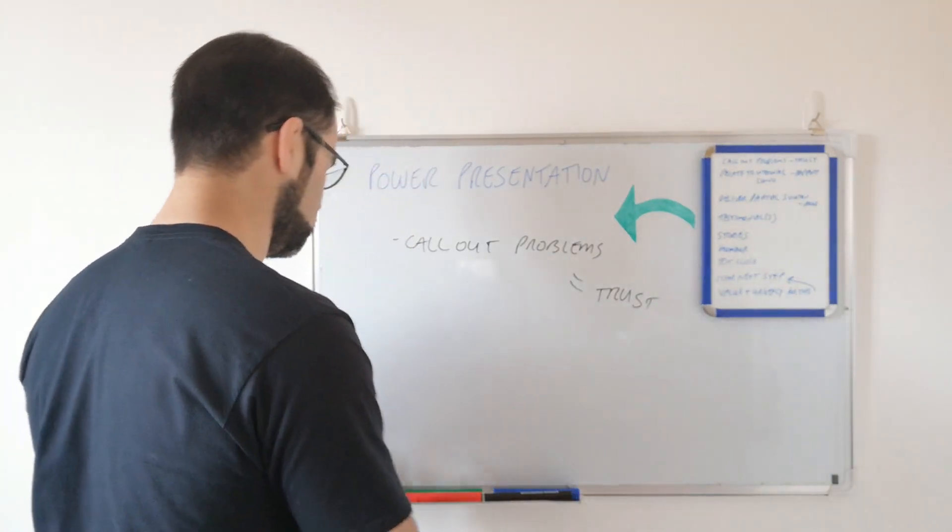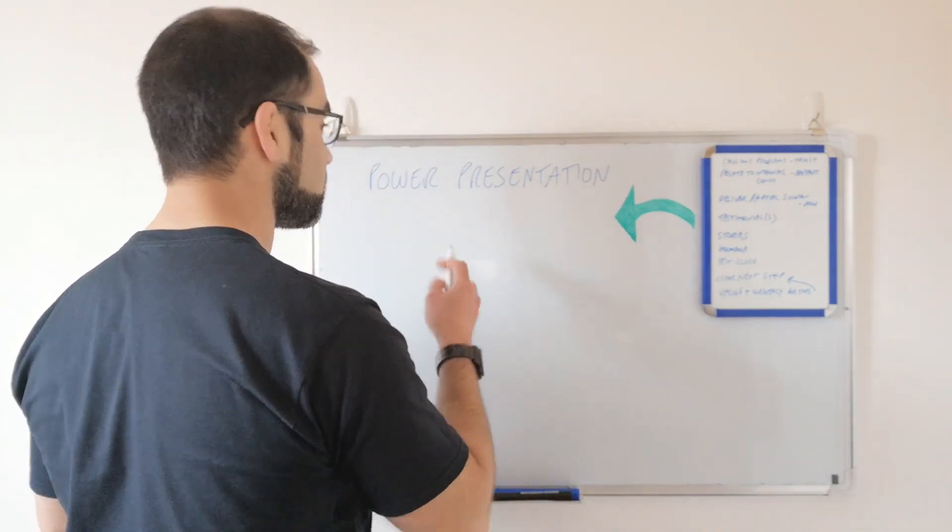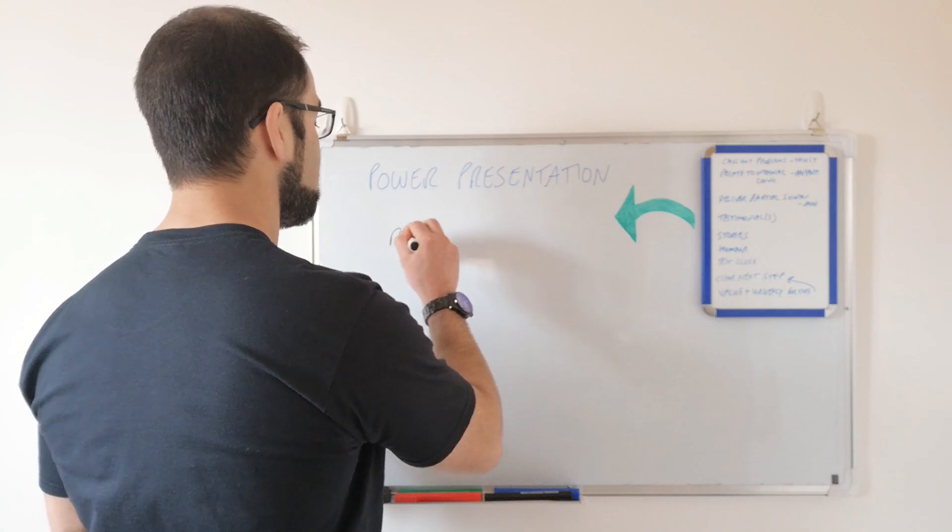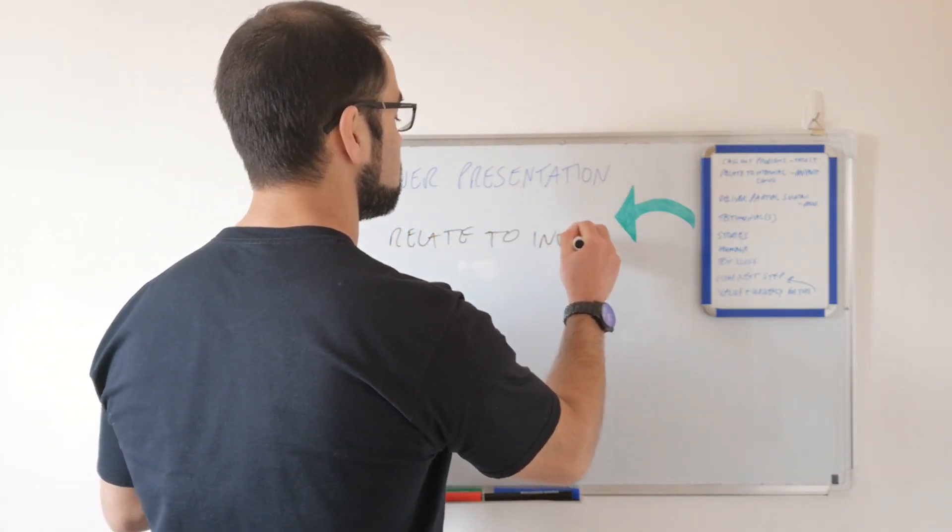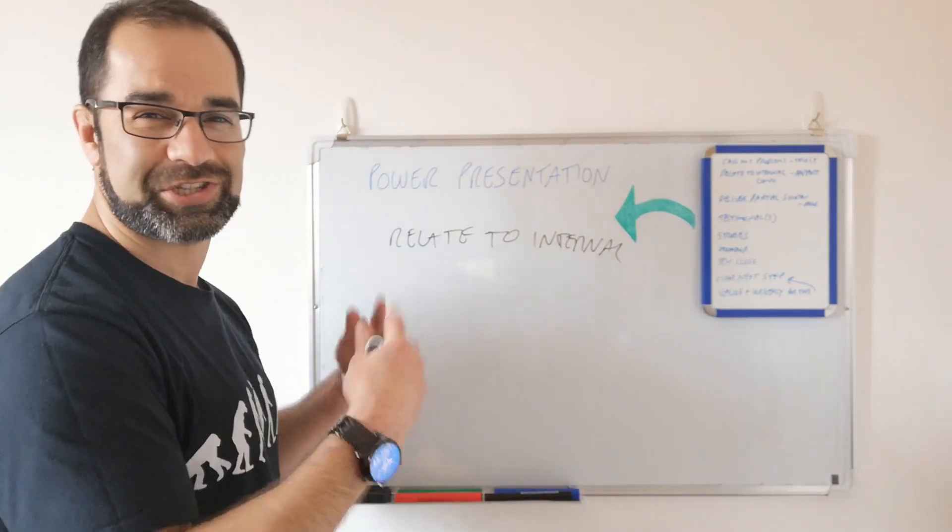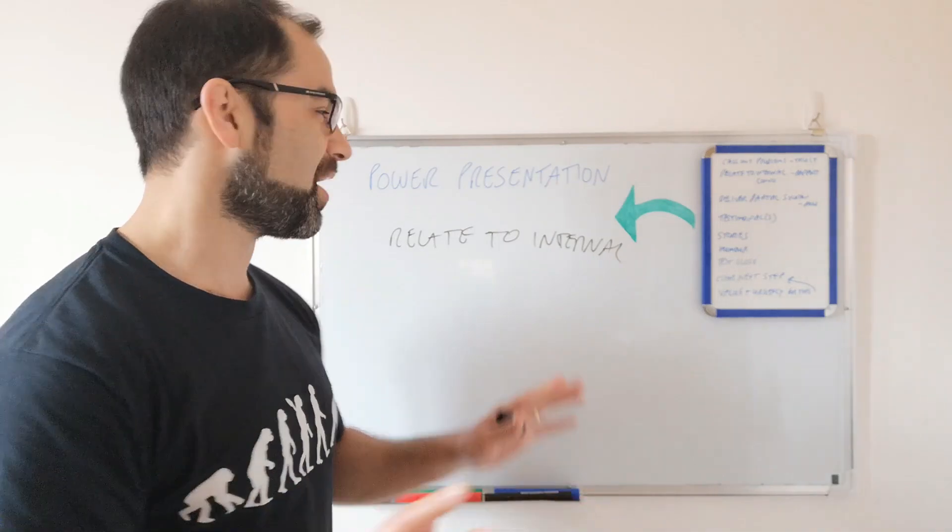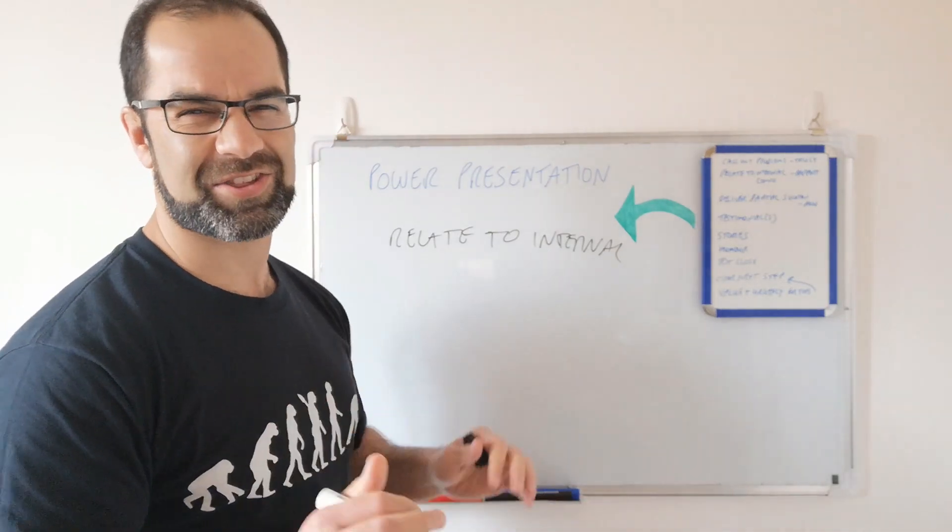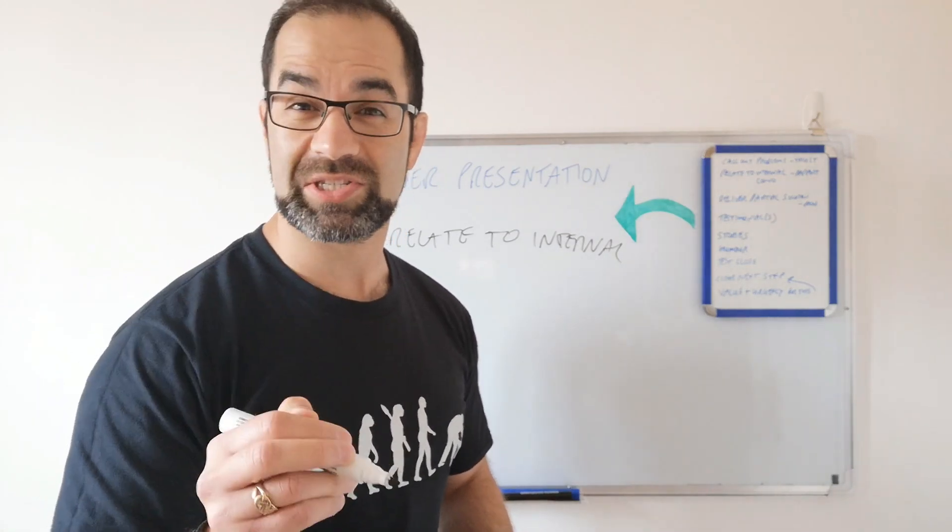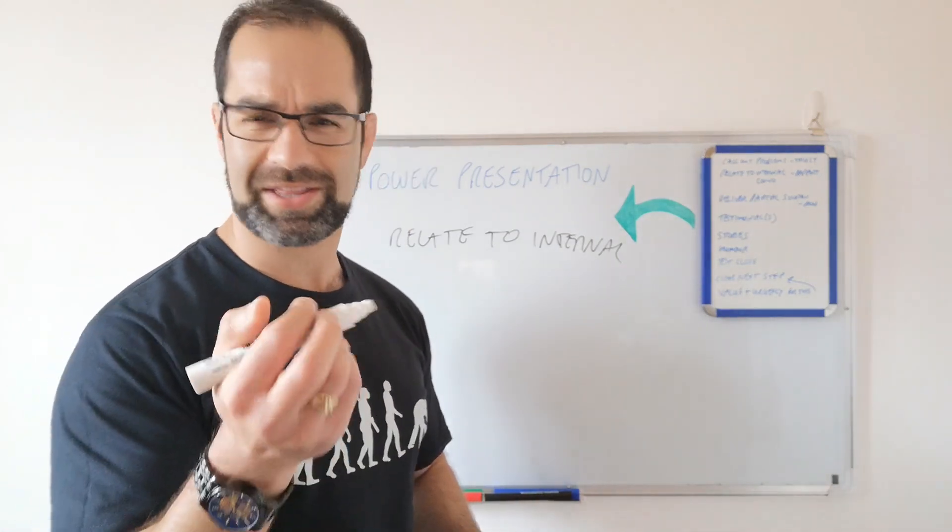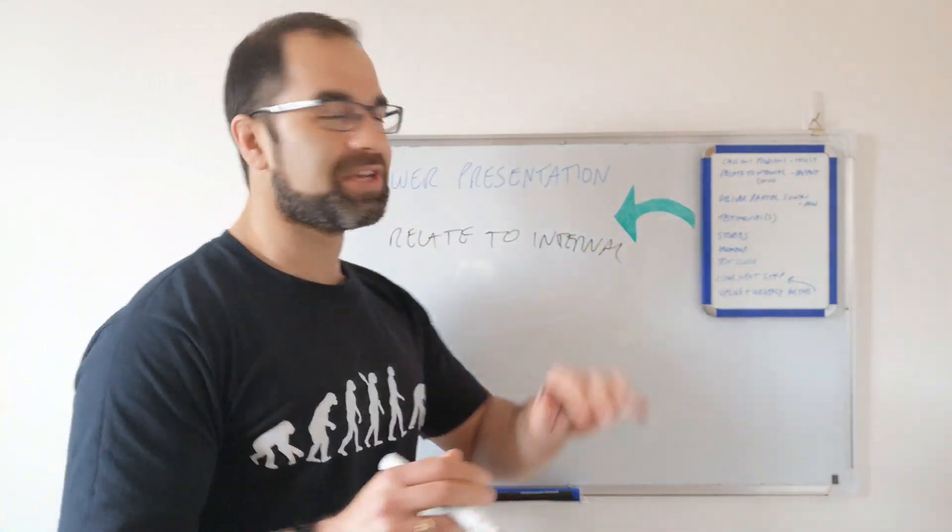The next thing you're going to do is you're going to relate to their internal conversation. Relate to internal. I know my writing is terrible, but just get the concepts. The concepts are stellar, make you a lot of money if you apply them. My writing, not so much. I think it's because I hold my pen weird. This is how I hold my pen. My daughter holds it the same way. Her writing looks identical. It's a genetic thing. Anyway, you don't care about that. So relating to the internal.